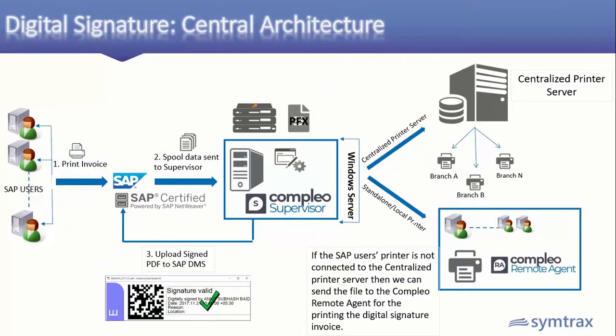For central signing, a dongle is not used — instead a PFX or HSM is used on the server location. The ERP user processes the document, it is captured in Compleo, signed centrally, and then distributed as required. For printing, if printers are on the network, the document routes to the respective printer. If printers are standalone or local, client software needs to be installed. In the cement industry for example, there can be huge document volumes with around 300-400 printing locations, and at month-end there's high volume where validation is not required but printing is needed — so central signing is ideal.